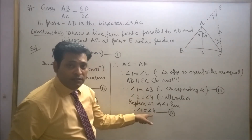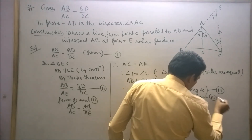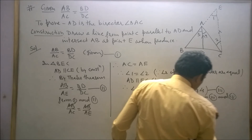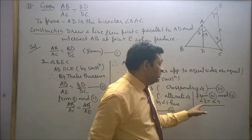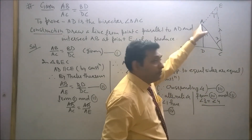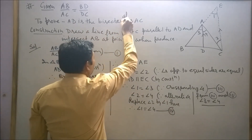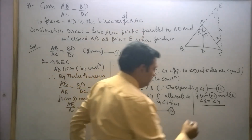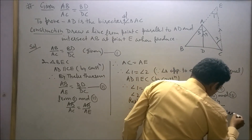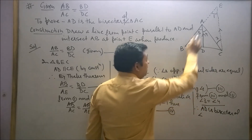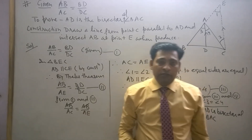From conditions three and four, we conclude that angle 3 is equal to angle 4. Therefore, AD is the bisector of angle BAC.